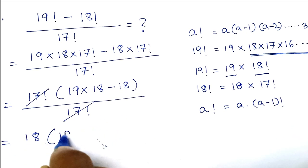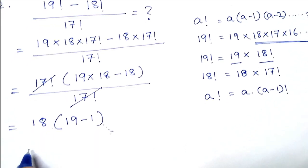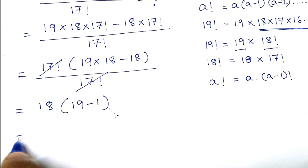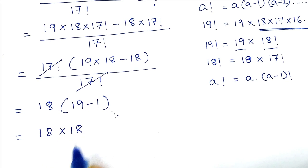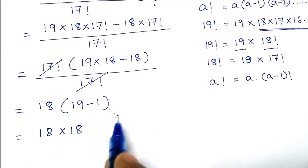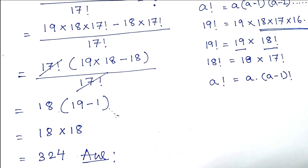Now if we take 18 as common, the expression becomes 18 into (19 minus 1), which is 18 into 18, and 18 squared is equal to 324. So 324 is the simplified answer of this expression. Thank you.